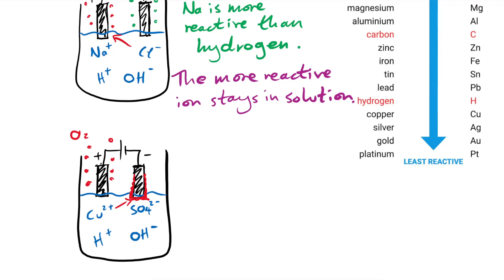So there we go. That's the reactivity of elements as you go down groups one, two, six, and seven, the reactivity series for metals, and what that means for various situations. Hope you found this helpful - if you did please leave a like and leave a comment down below if you have any ideas of what I could do next. See you next time.